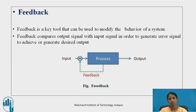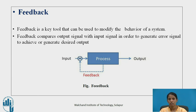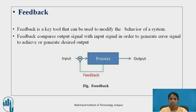What is feedback? Feedback is a key tool that can be used to modify the behavior of a system. Feedback compares the output signal with the input signal in order to generate an error signal and achieve the desired output. In the diagram, the output is fed back to the comparator — also called the summing point — so as to find the difference between the output and the input.